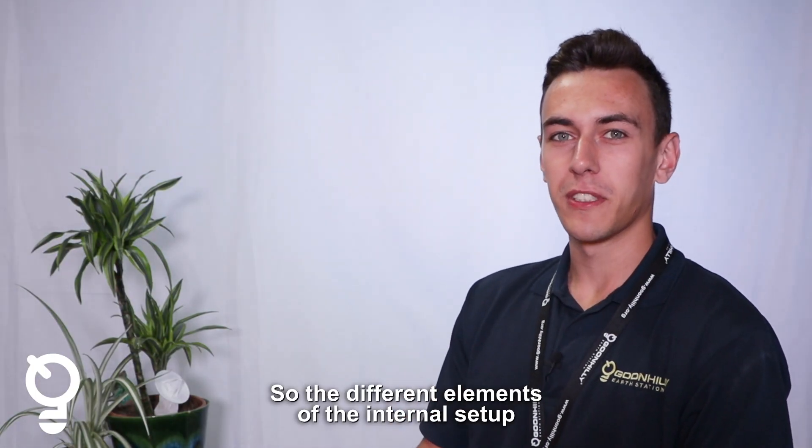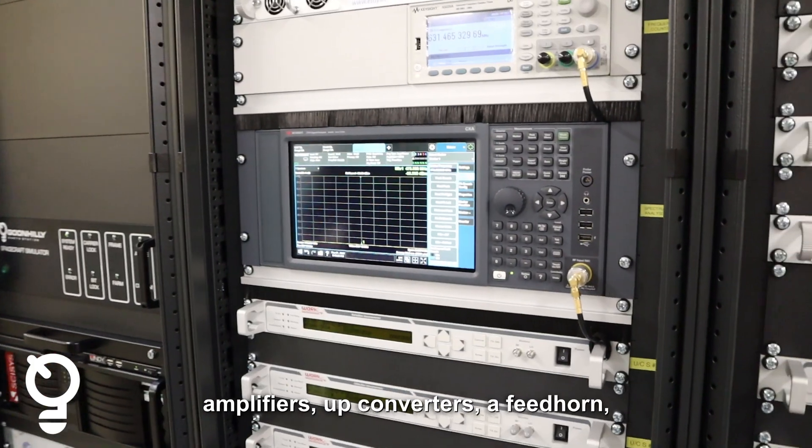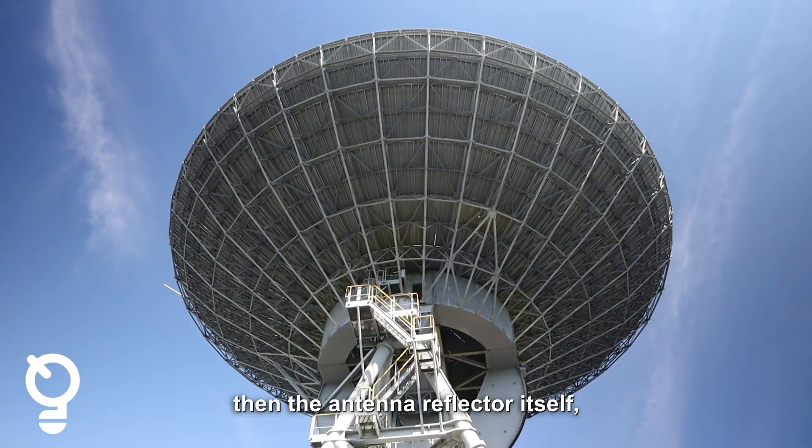The different elements of the internal setup are signal processing units, amplifiers, up converters, a feed horn, and the antenna reflector itself.